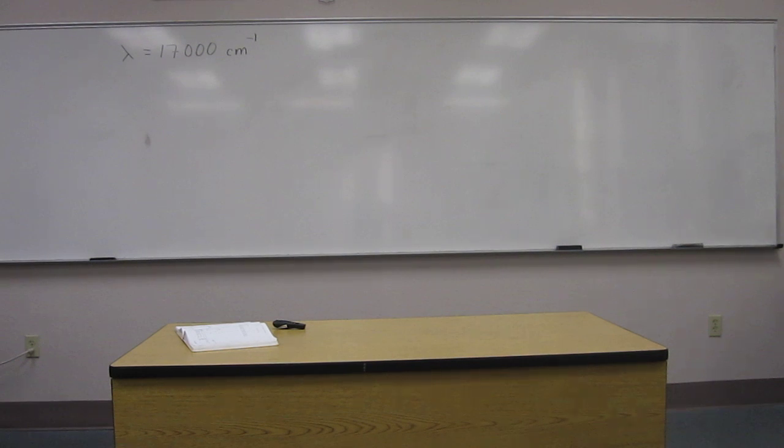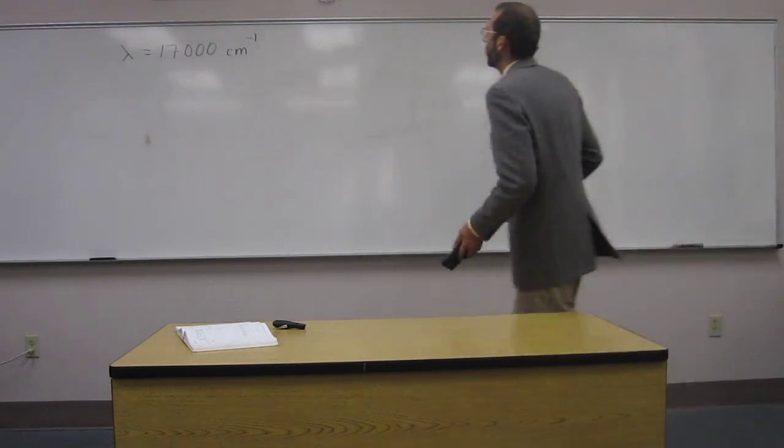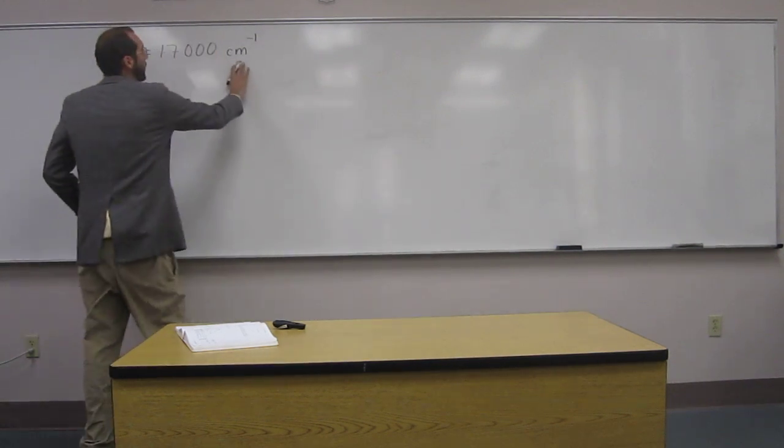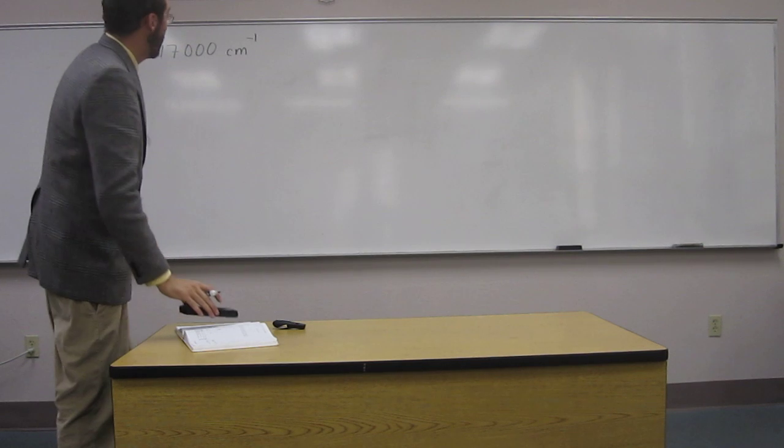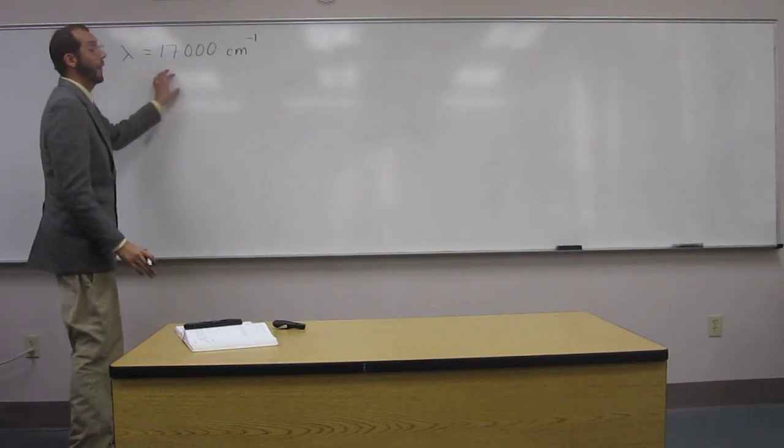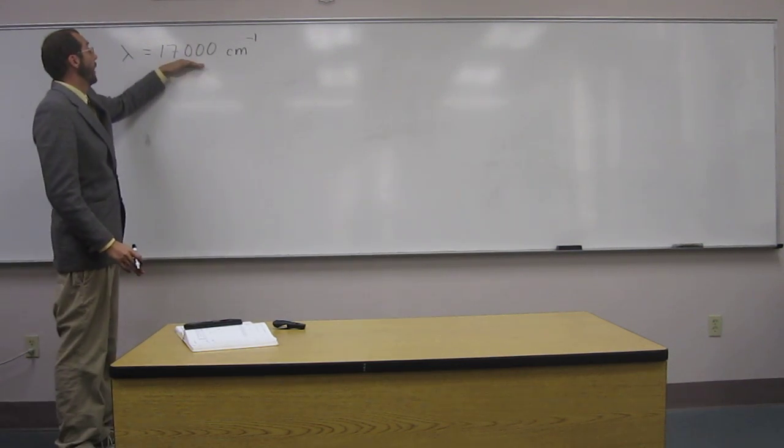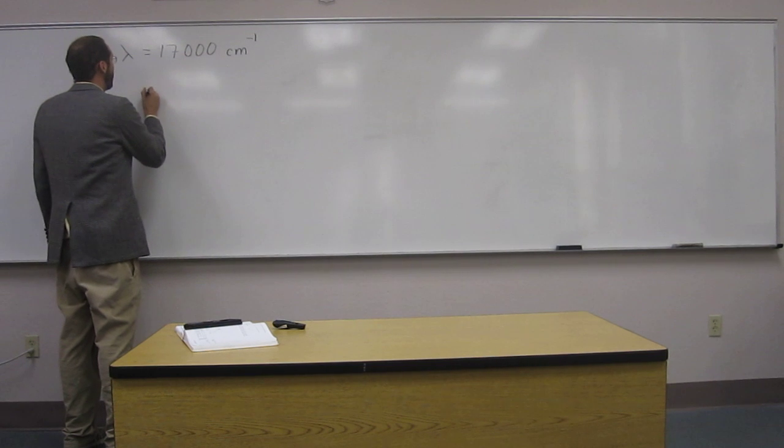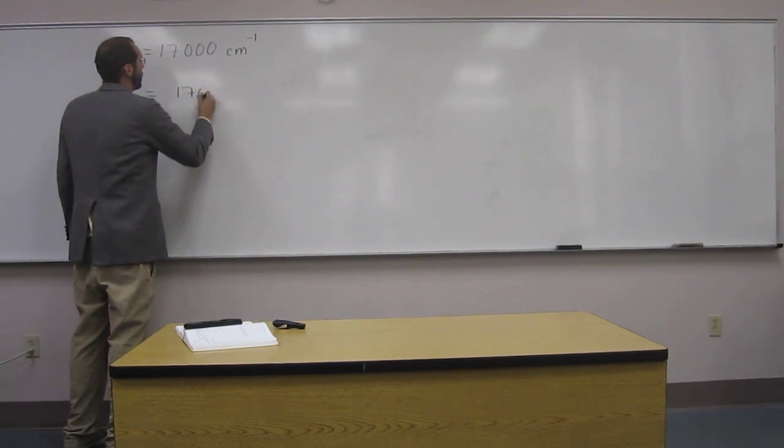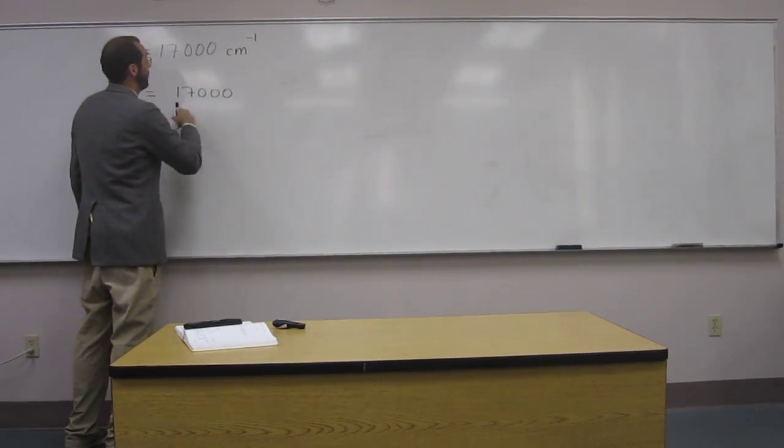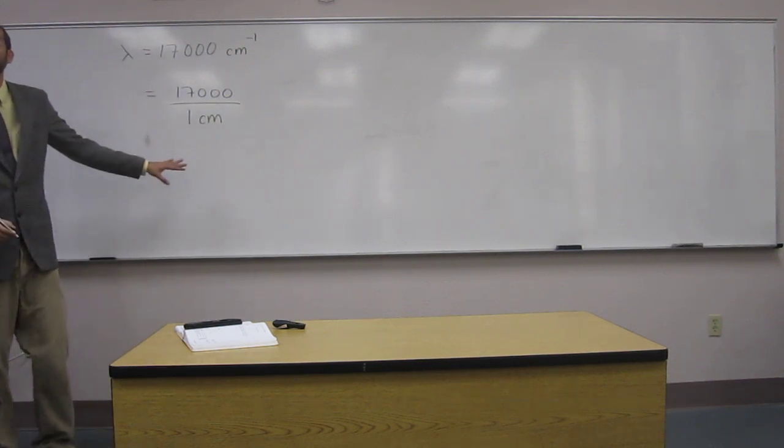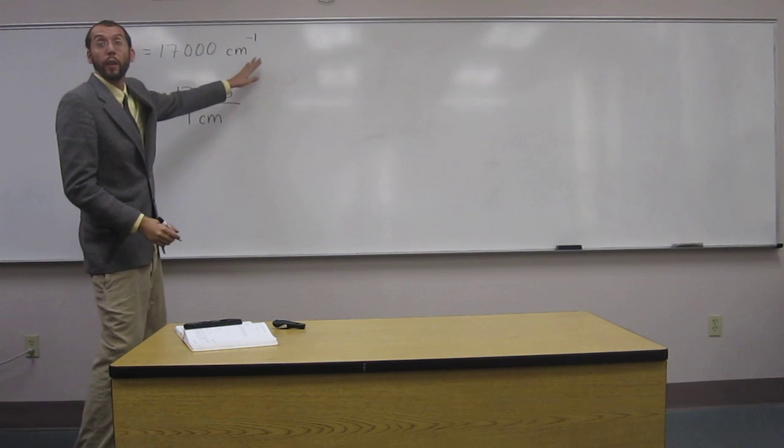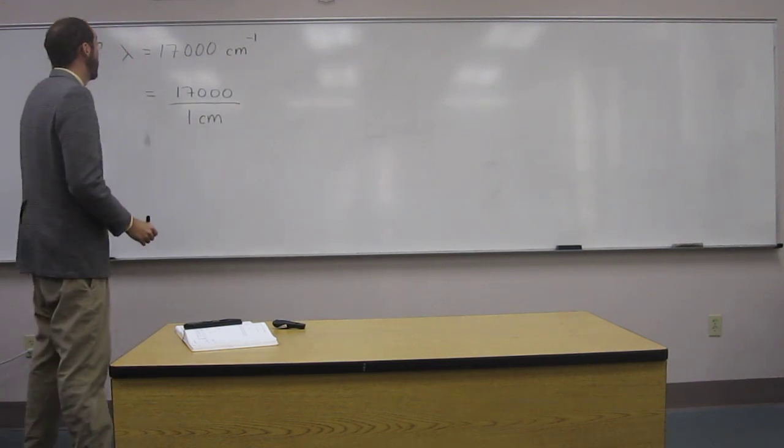So how do we do this? The first thing you want to remember is the units here are giving you a clue. So it's saying that this is in wavenumbers. You want to write it out: 17,000 divided by 1 centimeter. That's what it's saying, right? Because it's the minus one that's under the denominator.